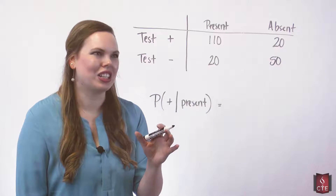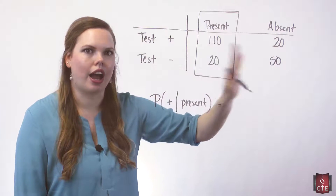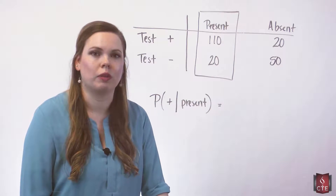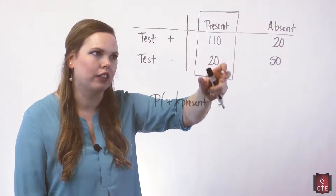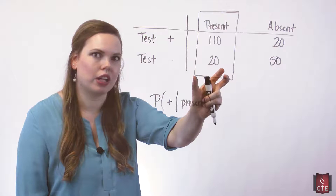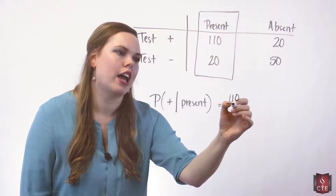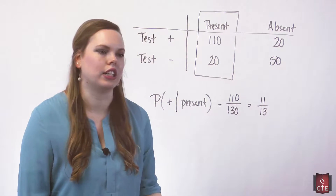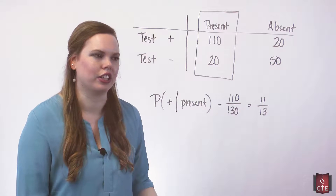We'll start with just looking at it — I like this a little better, and students tend to as well, being able to think through and process this problem versus the formula, which can be a little confusing and hard to remember. We know the condition is present, so we know we are out of these people who have the condition. The people without the condition are out of this problem because we know we didn't draw one of them. We're not out of all 200 people that were tested — we're just out of these 130 people where the condition was present. We want the probability of a positive result, so given that we're here, there were 110 that tested positive. So we have 110 out of 130, which reduces to 11 out of 13.